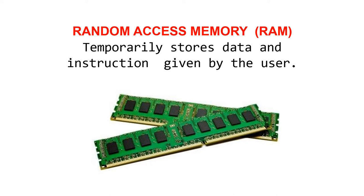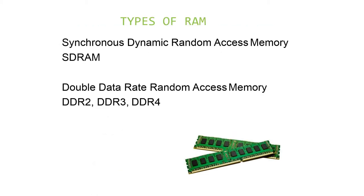RAM, or random access memory, is the hardware in a computing device where the operating system, application programs, and data currently in use are kept so they can be quickly reached by the processor. RAM is the main memory in a computer and is much faster to read from and write to than other storage such as a hard disk drive. In the early 1990s, clock speeds were synchronized with the introduction of synchronous dynamic RAM, or SDRAM, allowing computers to execute tasks faster.